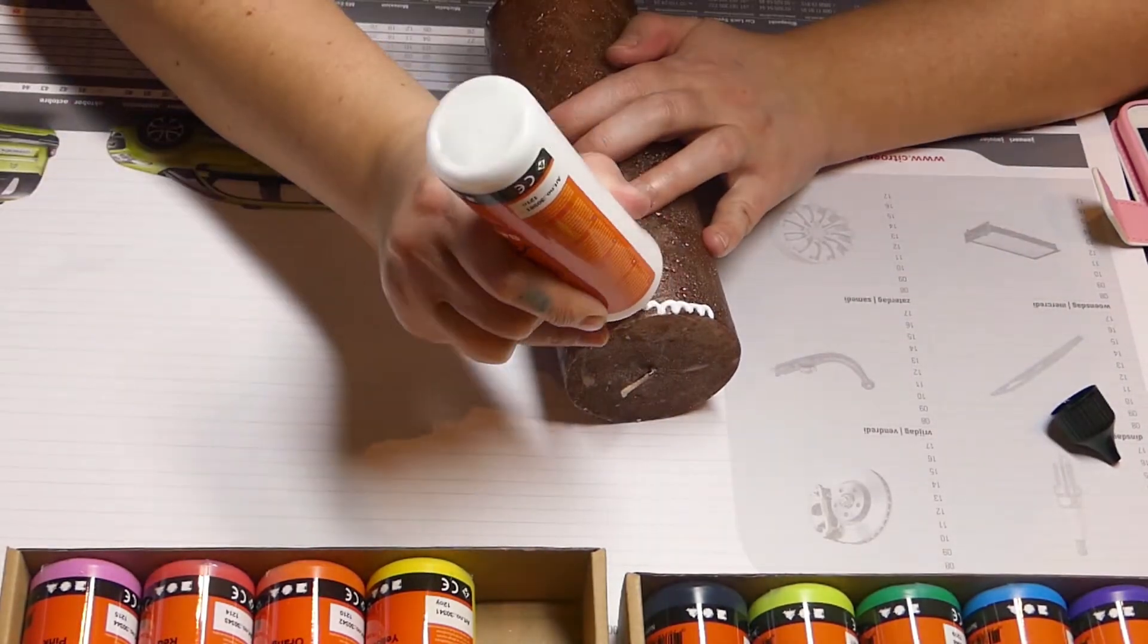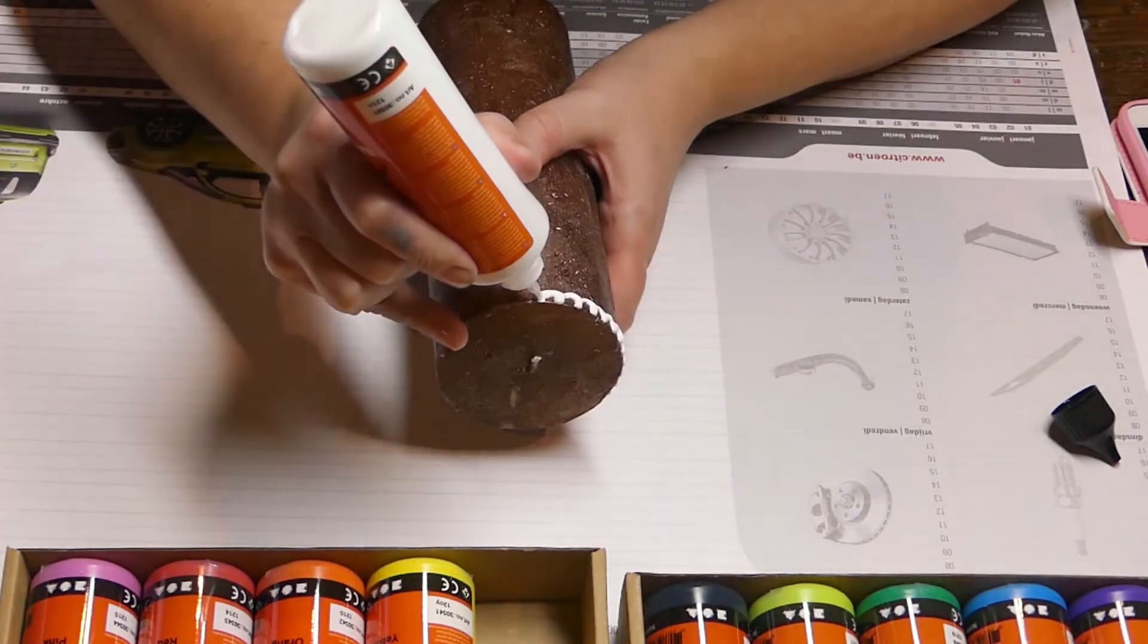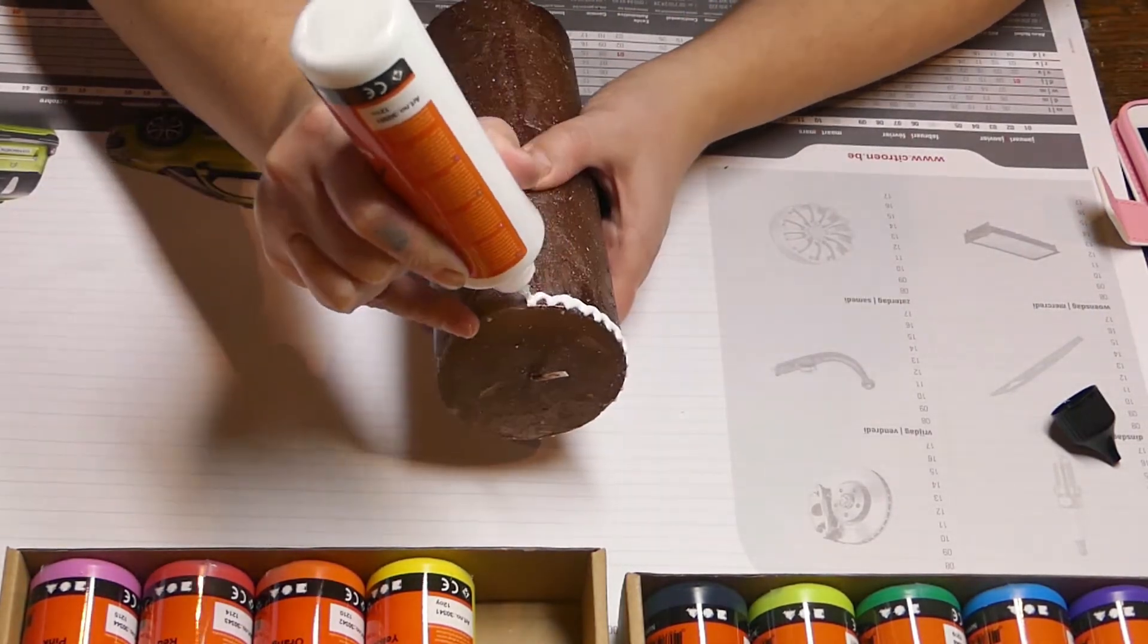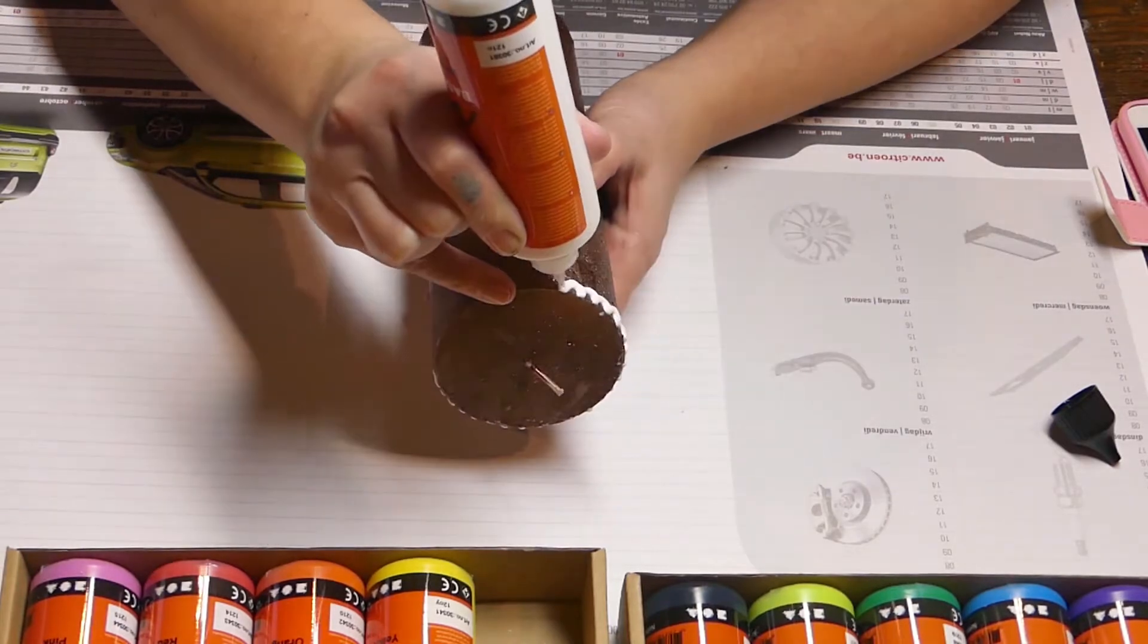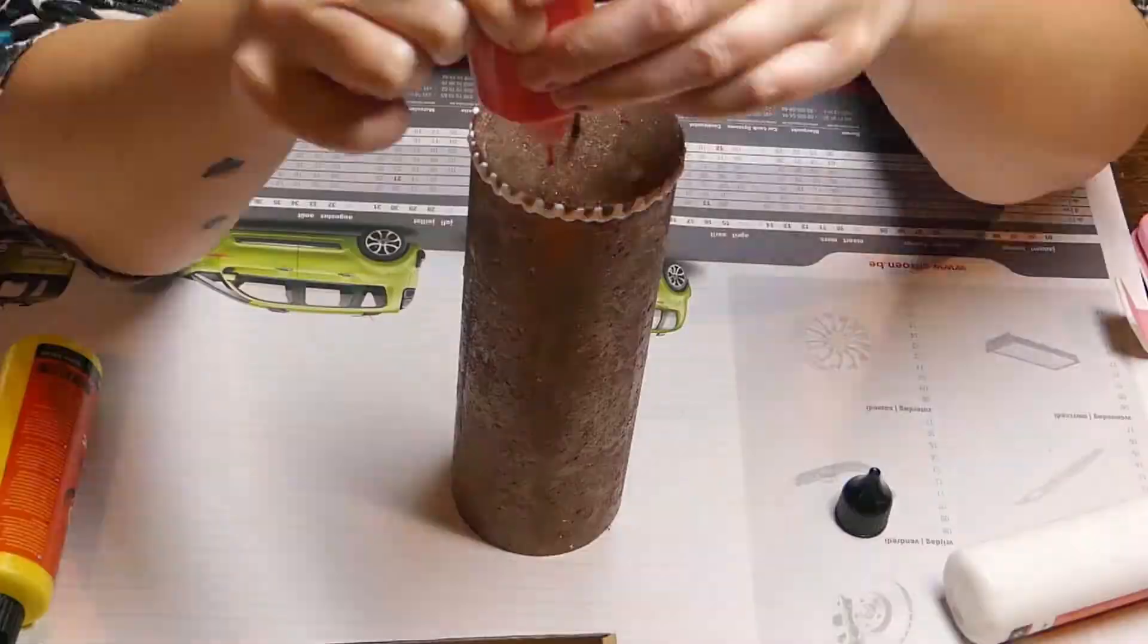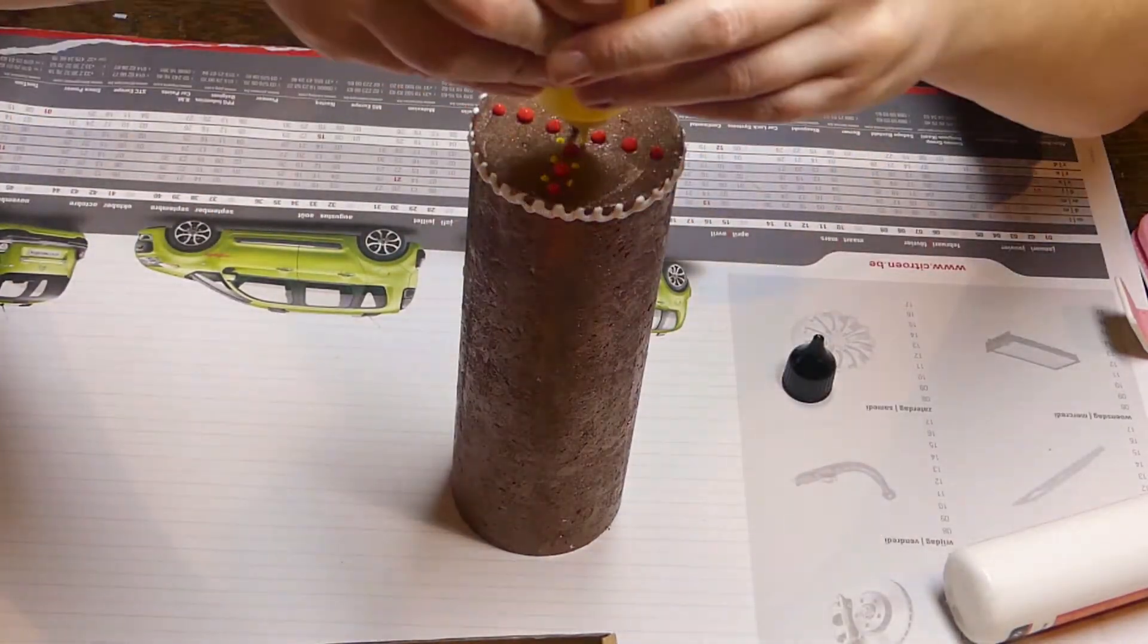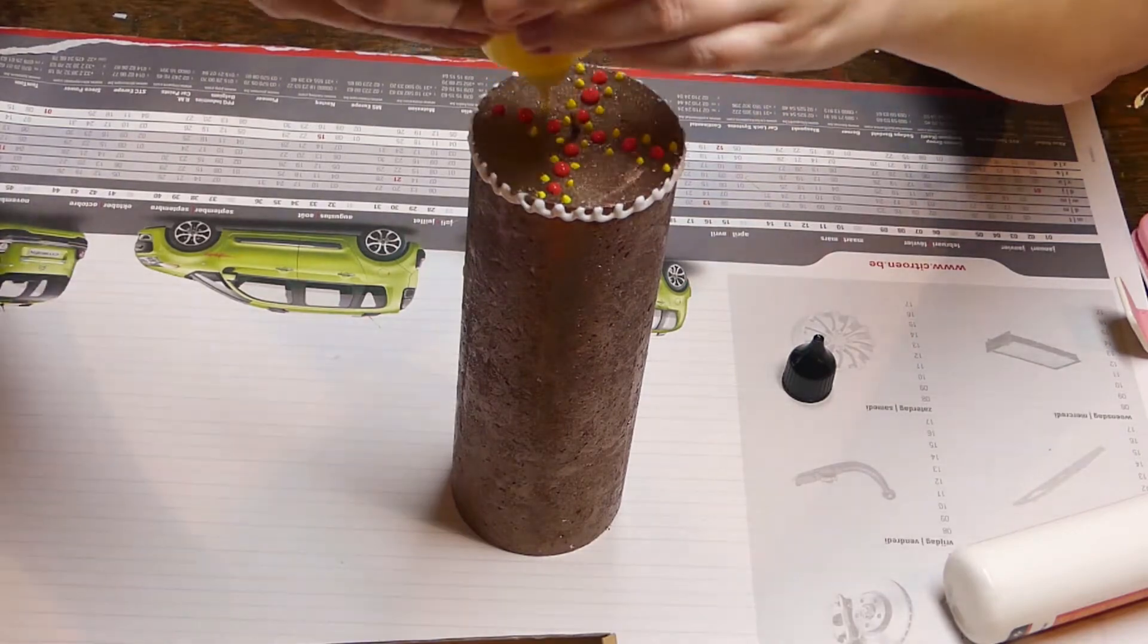Shake your 3D liner paints before use. Draw directly onto your candle and make the design you want. I'm doing random things here with all of my colors, because I'm going for fun and colors.